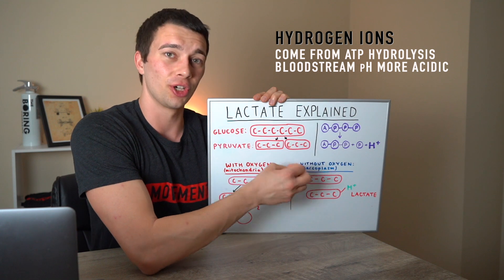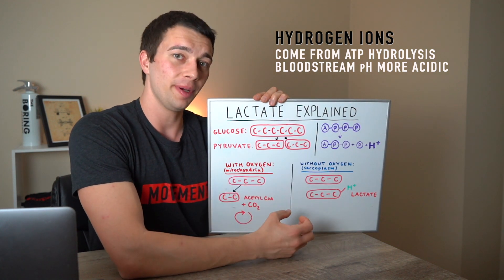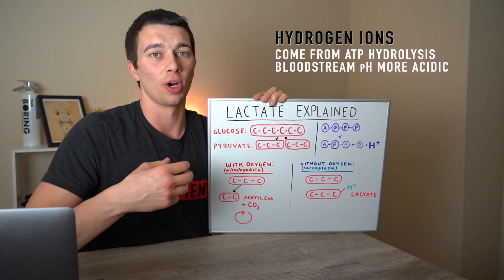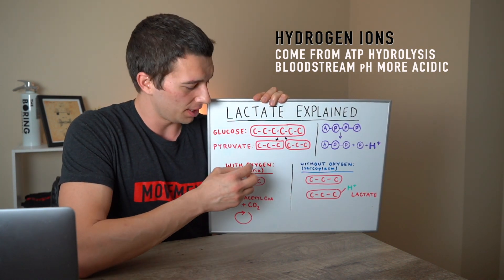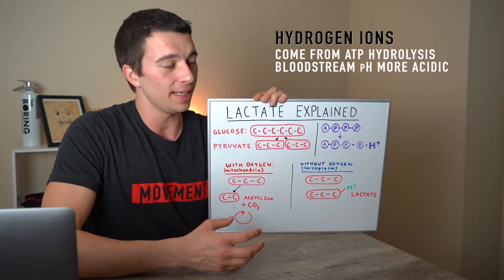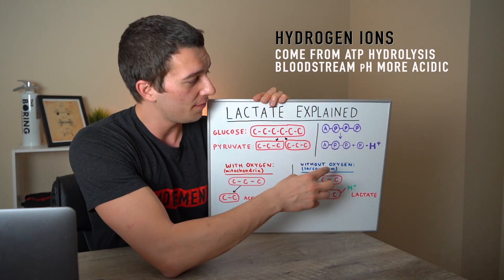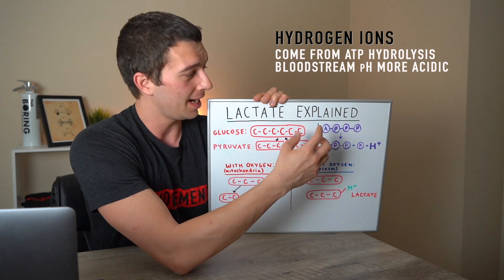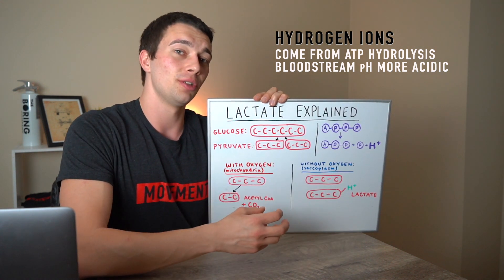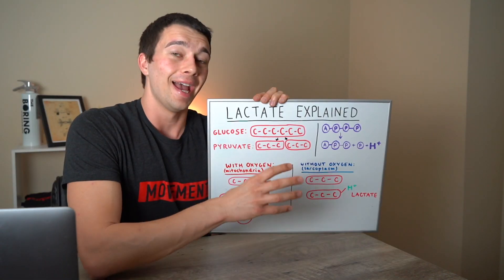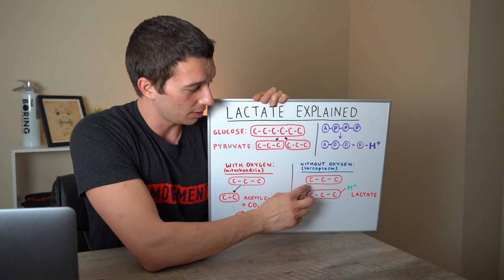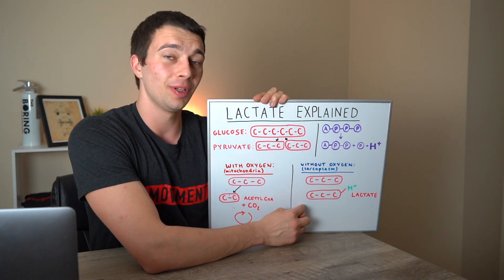That hydrogen ion causes the pH to drop in the bloodstream, putting us in muscle acidosis. When would this occur? During anaerobic exercise — something fairly taxing on the body like intervals or high-intensity training — where we can't supply adequate oxygen for the amount of work we're doing. In that anaerobic state, we're doing enough ATP hydrolysis that hydrogen ions build up, pH drops, and the bloodstream becomes an acidic environment. At the same time, we're taking those pyruvates and turning them into lactate.